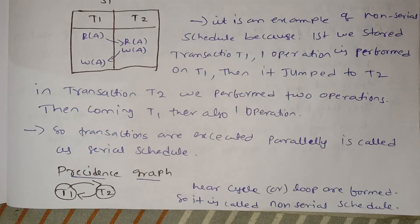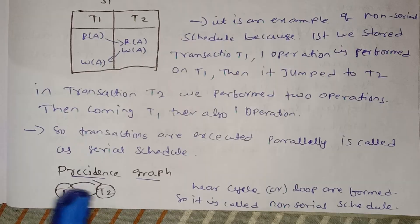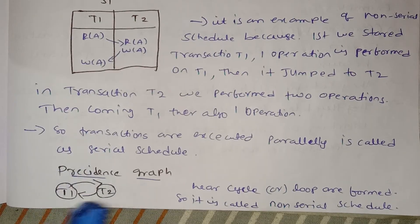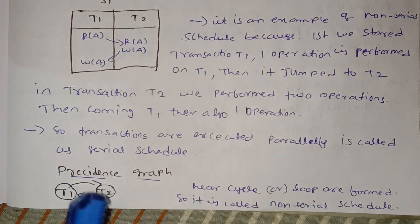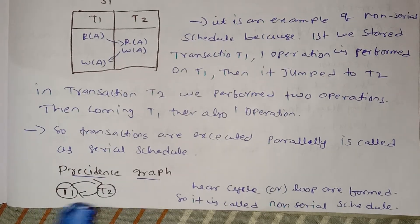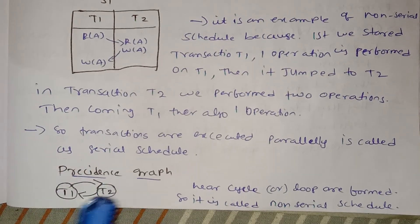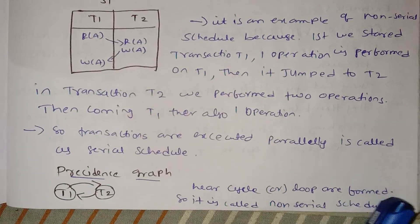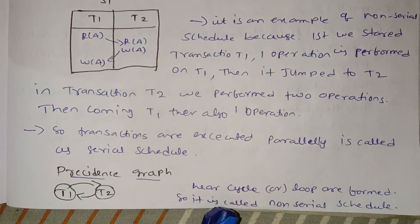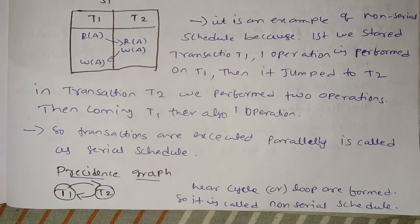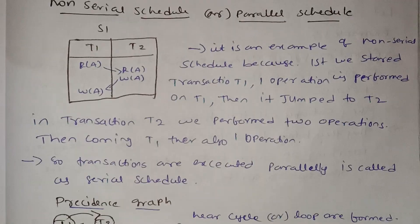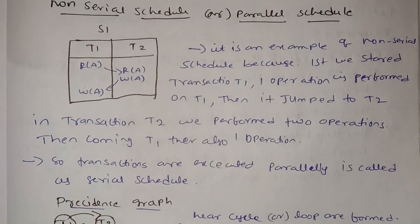This is called a directed graph — the Precedence Graph. Here there is a cycle. Because a cycle exists in the Precedence Graph, this Non-Serial Schedule is not serializable. When a cycle is detected, we cannot convert it to a valid Serial Schedule.